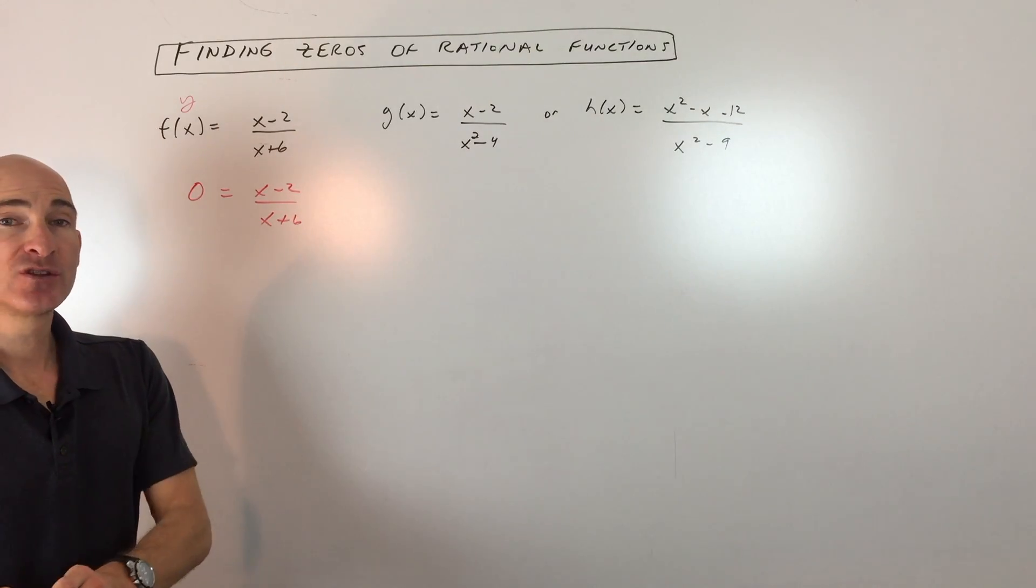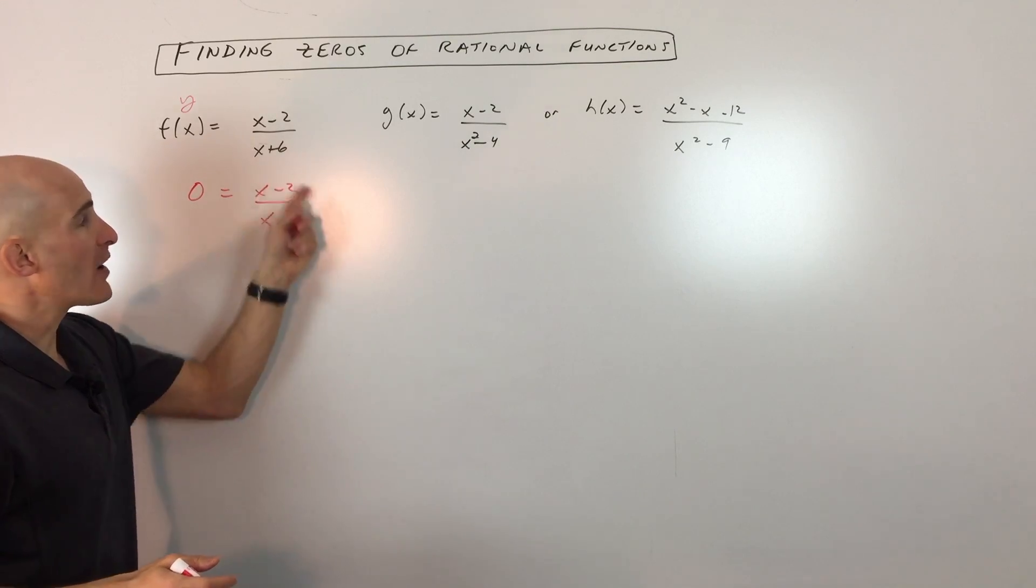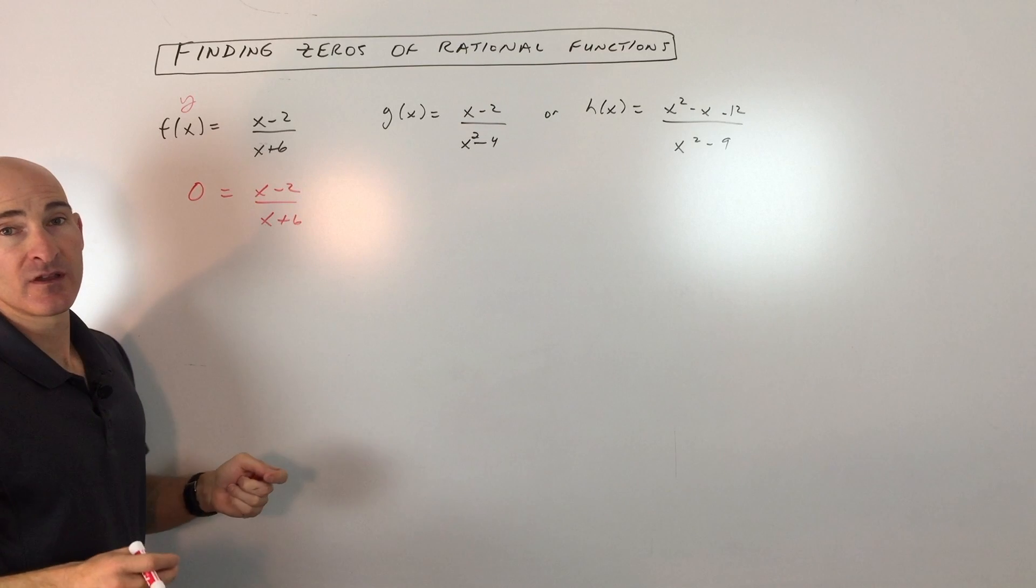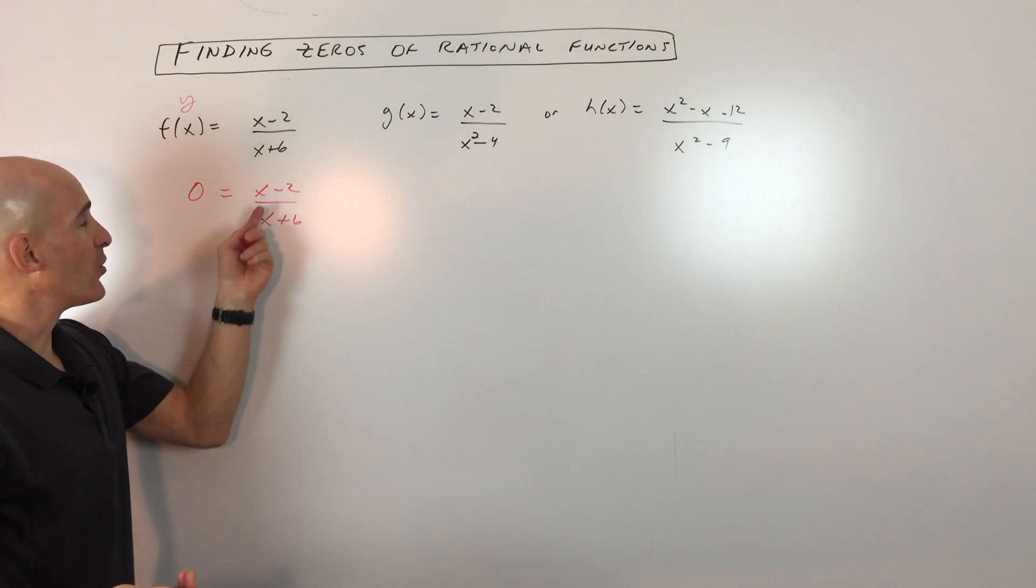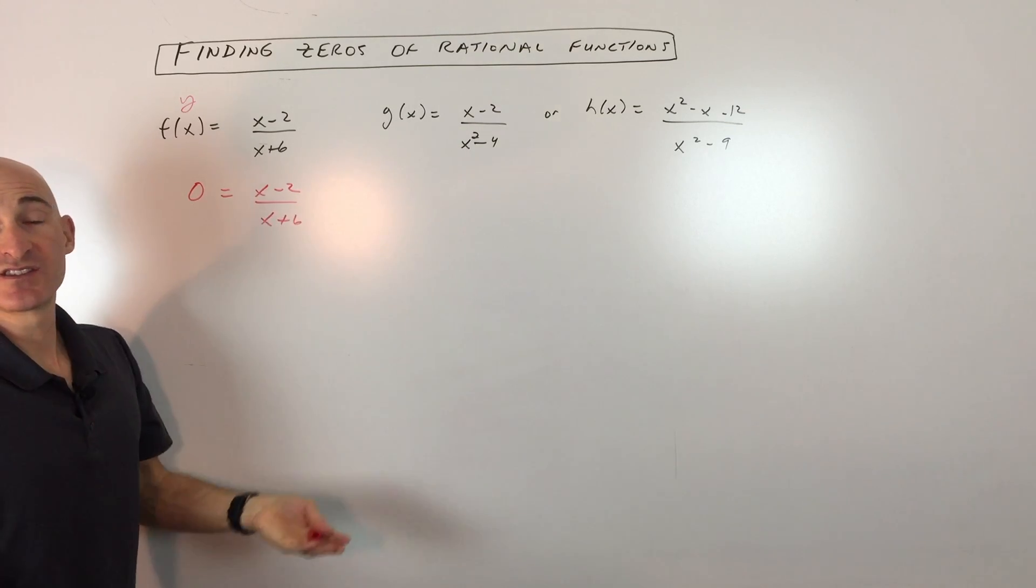There's a couple different ways to look at this. One way is that the only way this fraction will equal zero is if the numerator is zero. So you can see the only way this would be zero is if x equals 2, so 2 is the zero.